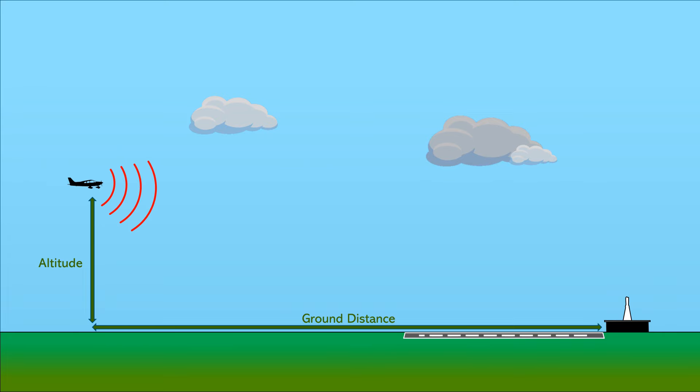The DME station receives this and sends back a reply. The DME times the round trip of the signals and computes the straight line distance to the station, called slant range distance. Here's why both our altitude and ground distance play into what the DME actually displays.